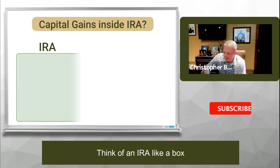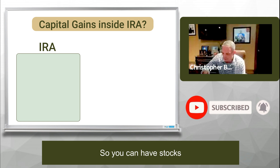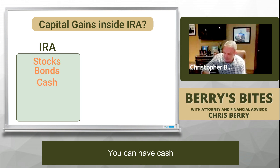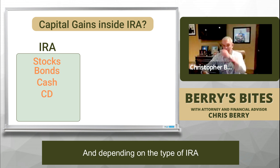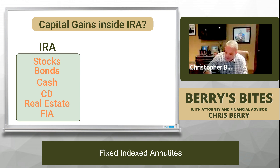Think of an IRA like a box. You can have a lot of different investments inside of this box — stocks, bonds, cash, CDs. And depending on the type of IRA, you can even have things like real estate and other alternative investments, like fixed index annuities. A lot of times we see these inside of IRAs.